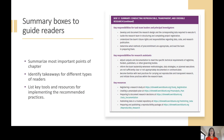Each chapter starts with a box summarizing the most important points in the chapter, and key takeaways for different types of readers, including task team leaders, principal investigators, and research assistants. This is designed to allow different types of readers to easily identify the chapters and sections that are most relevant to them. The summary boxes also offer a list of key tools and resources for implementing the practices recommended in that chapter.